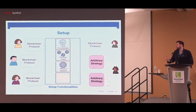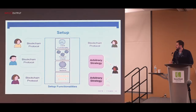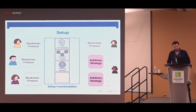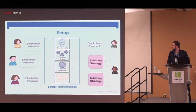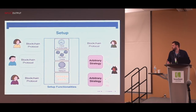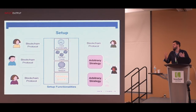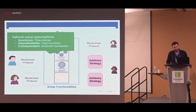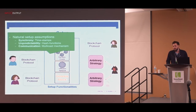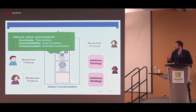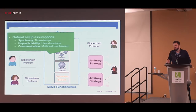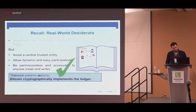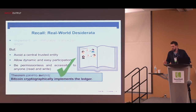We usually need more assumptions from the real world than just the network when we want to reach something like consensus. In Bitcoin, for example, the assumptions are quite natural: a reference of time, a random oracle as we saw this morning, a diffusion network with some bounded delay, and parties need to agree on a genesis block to be assured they're working in the same context. These are fairly natural guarantees — timestamps for time, random oracles to model hash functions, and multicast mechanisms for communication.